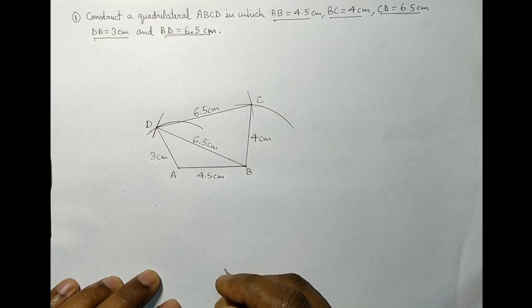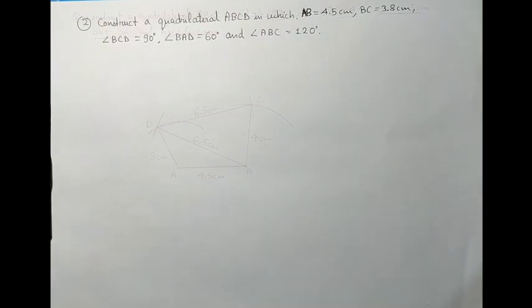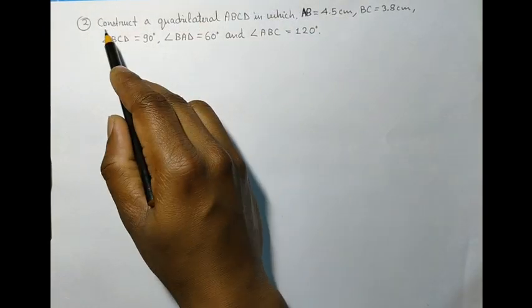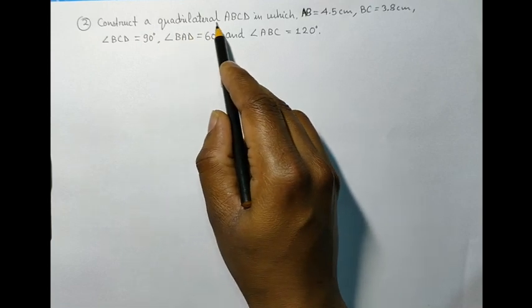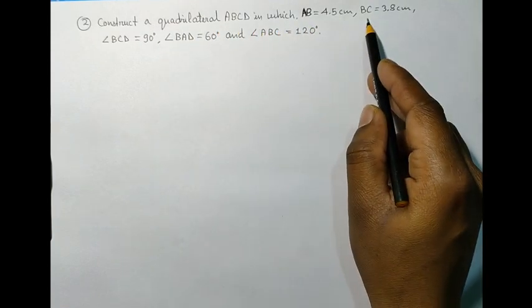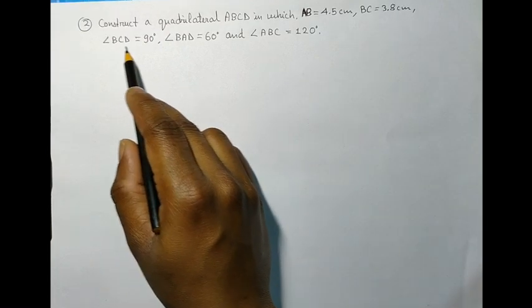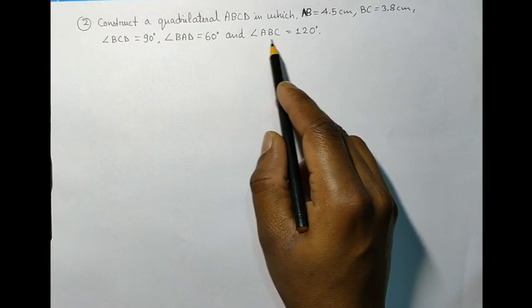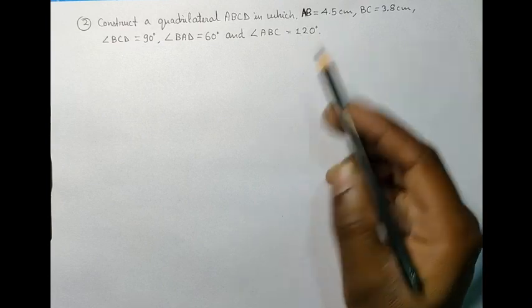So, we are done with the quadrilateral. Let's take another question, construct a quadrilateral ABCD, in which AB is equal to 4.5 cm, BC is equal to 3.8 cm, angle BCD is 90 degree, angle BAD is 60 degree, and angle ABC is 120 degree.